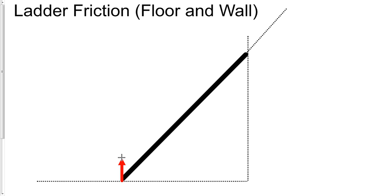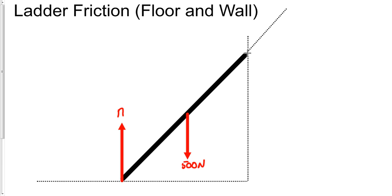For a normal ladder problem you always have a normal force going up from the floor. You'll typically have the weight of the ladder going down — let's say 500 Newtons. And when the ladder leans against the wall, there's a reaction force at the top. N is the reaction force of the floor versus the ladder; R is the reaction force of the wall against the ladder.